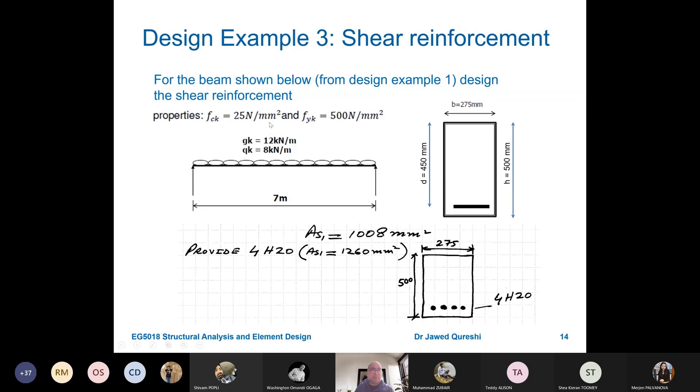FCK is given 25 Newton per millimeter square, FYK 500, and the dimensions are same and the loading is same as we had in example of singly reinforced beams. And this result, because AS1 is used in some of the formula, so that's why I have taken these results from that example.